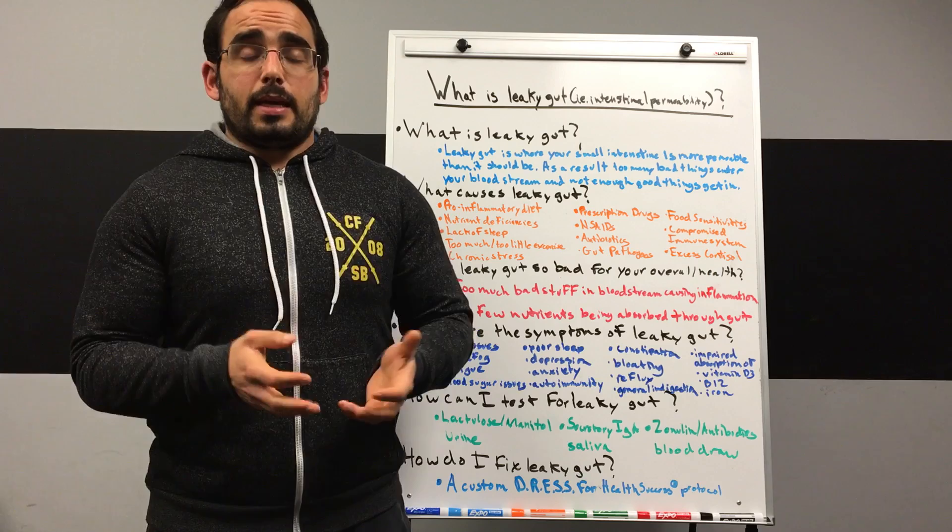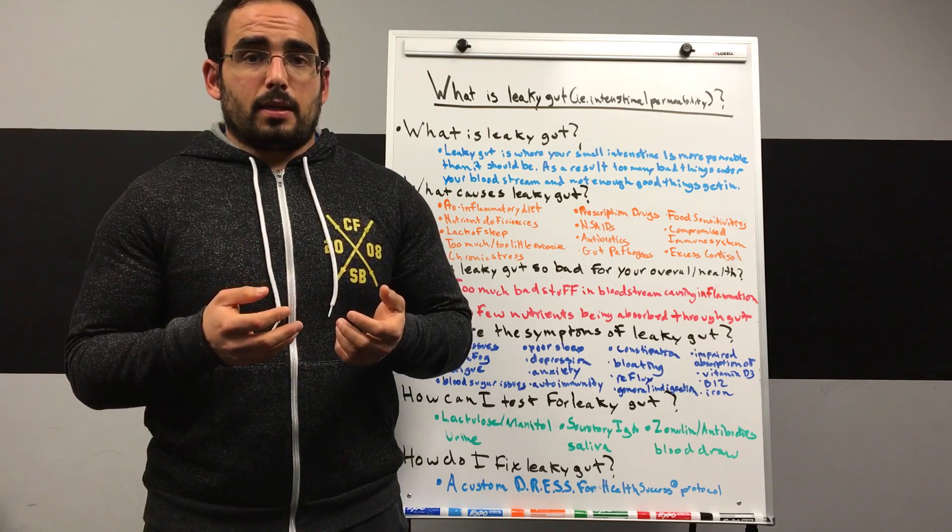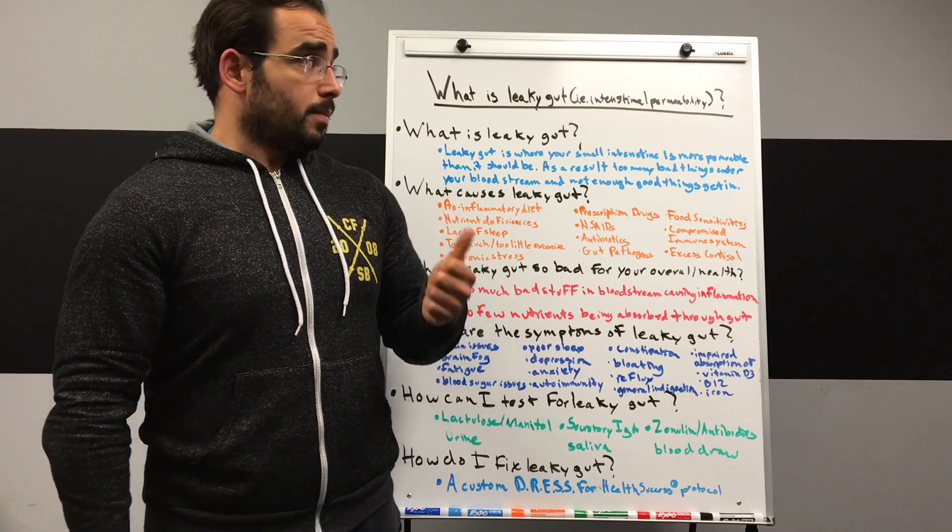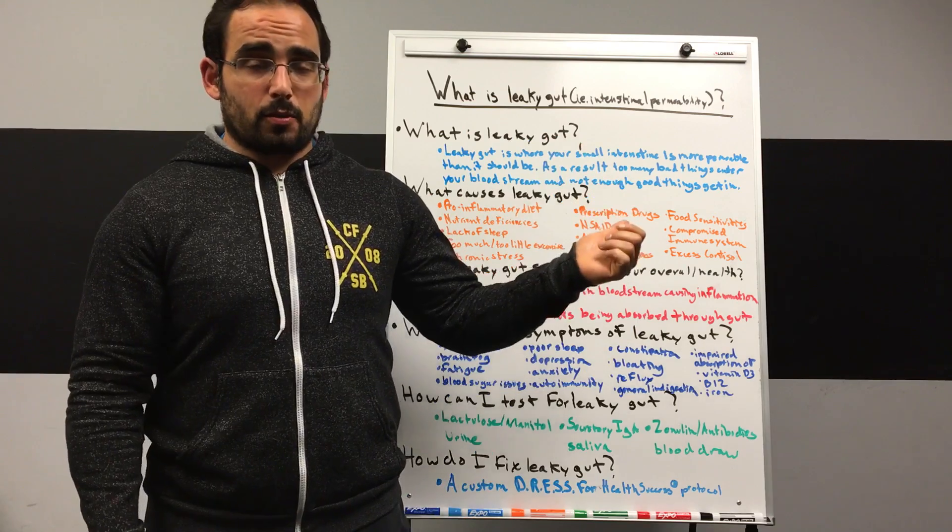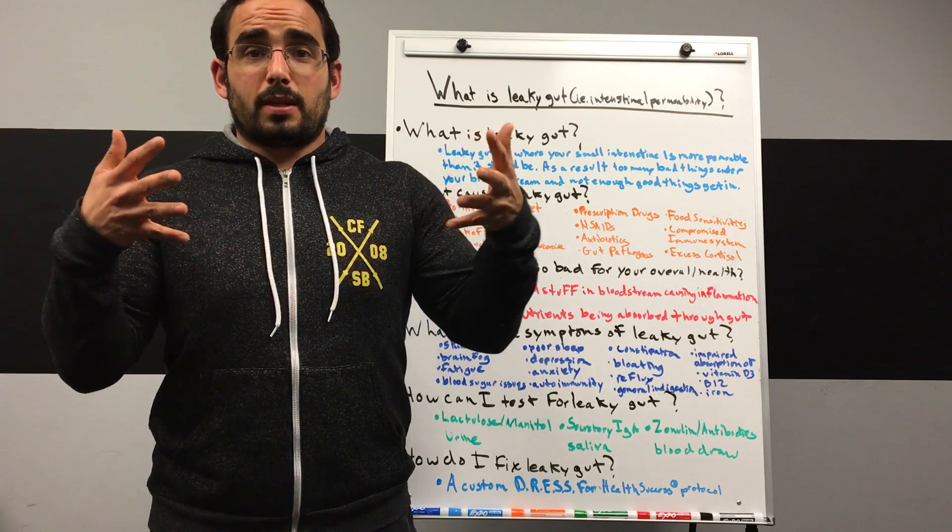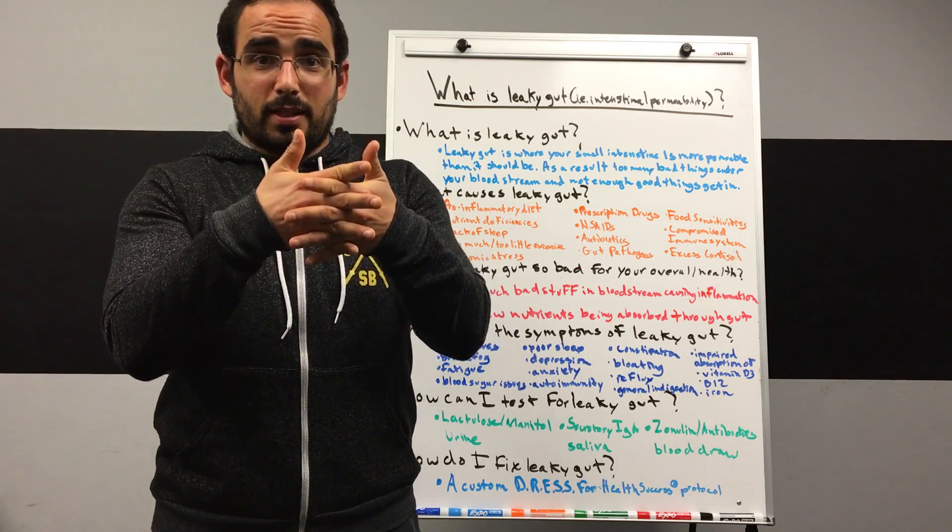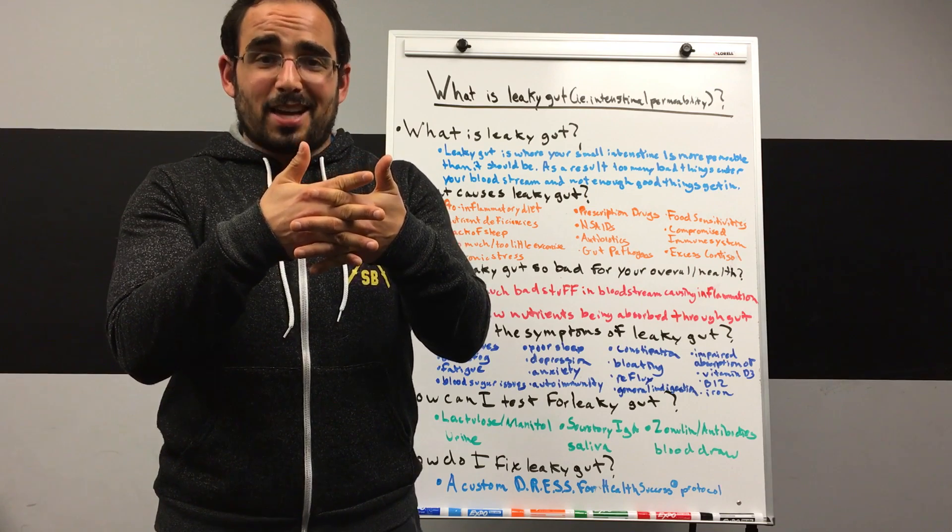Here's the headline. Leaky gut is basically a colloquial term for something that's more properly referred to as intestinal permeability. It's basically where the lining of your small intestine, which should look roughly like this, not exactly, but roughly...